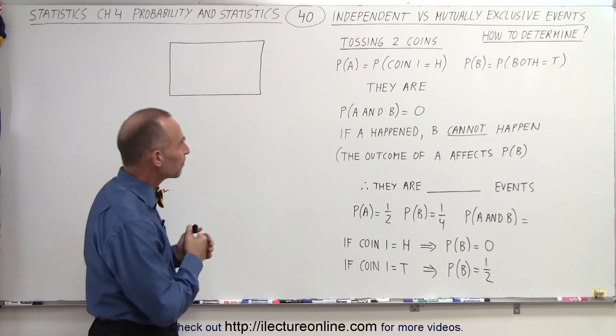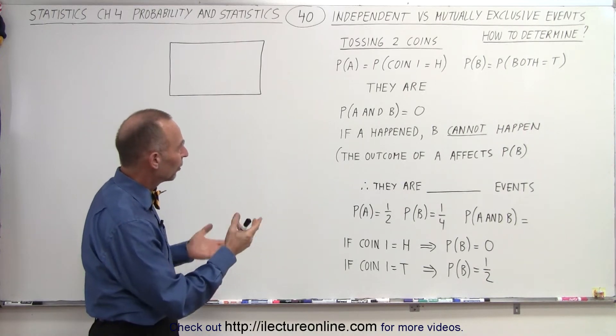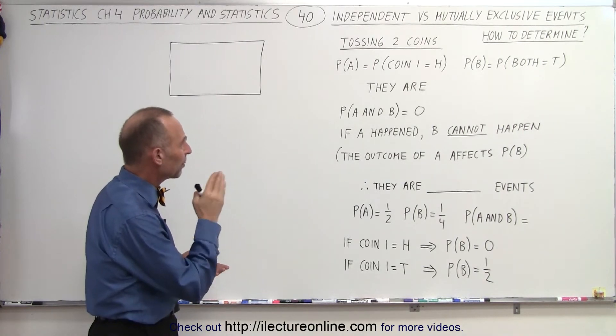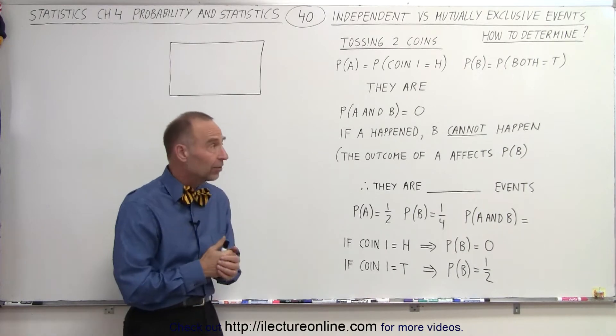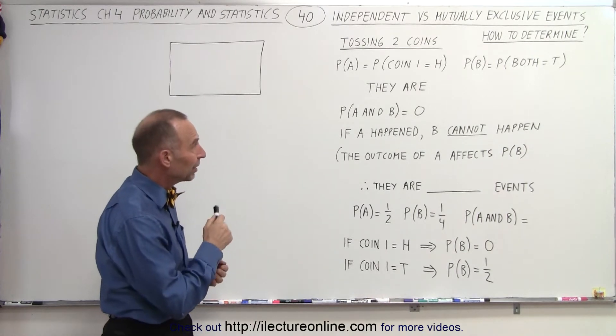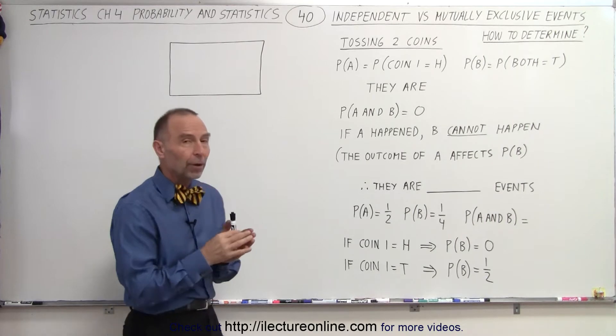What are they? We're tossing two coins. The probability of A is that the probability of coin one is equal to heads, and the probability of B is equal to that both of them are tails.